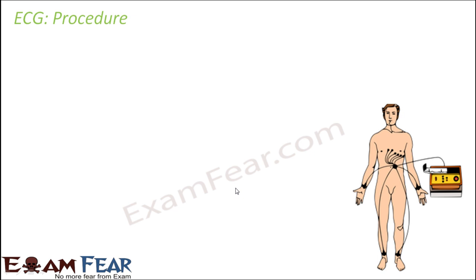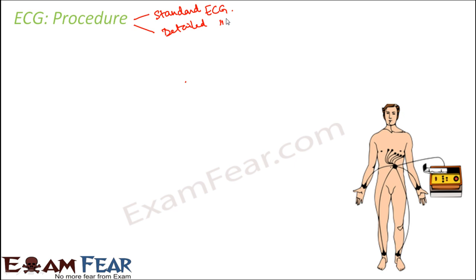Let us look at the procedure to perform an ECG — how we do this test to know the electrical activity of the heart. There are two types of ECG: a standard ECG and a detailed ECG. A standard ECG gives you an overall idea about whether the electrical activity of the heart is proper or not, whereas a detailed ECG gives much more detail about every minute activity inside the heart. Here we are going to talk about only the standard ECG.